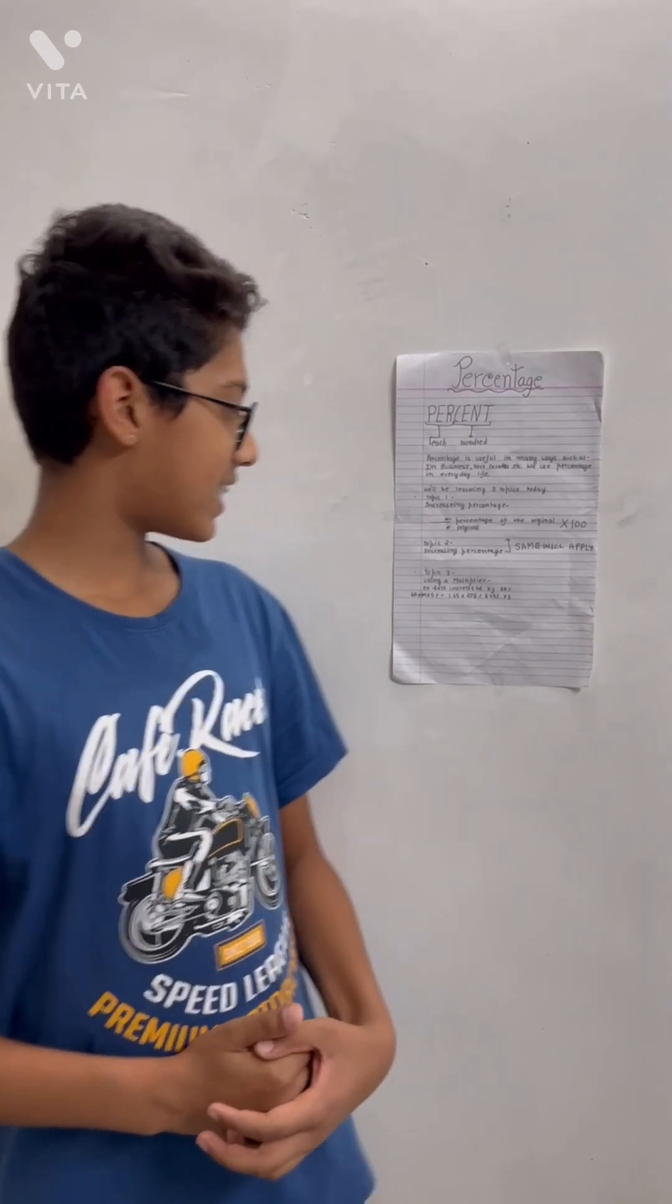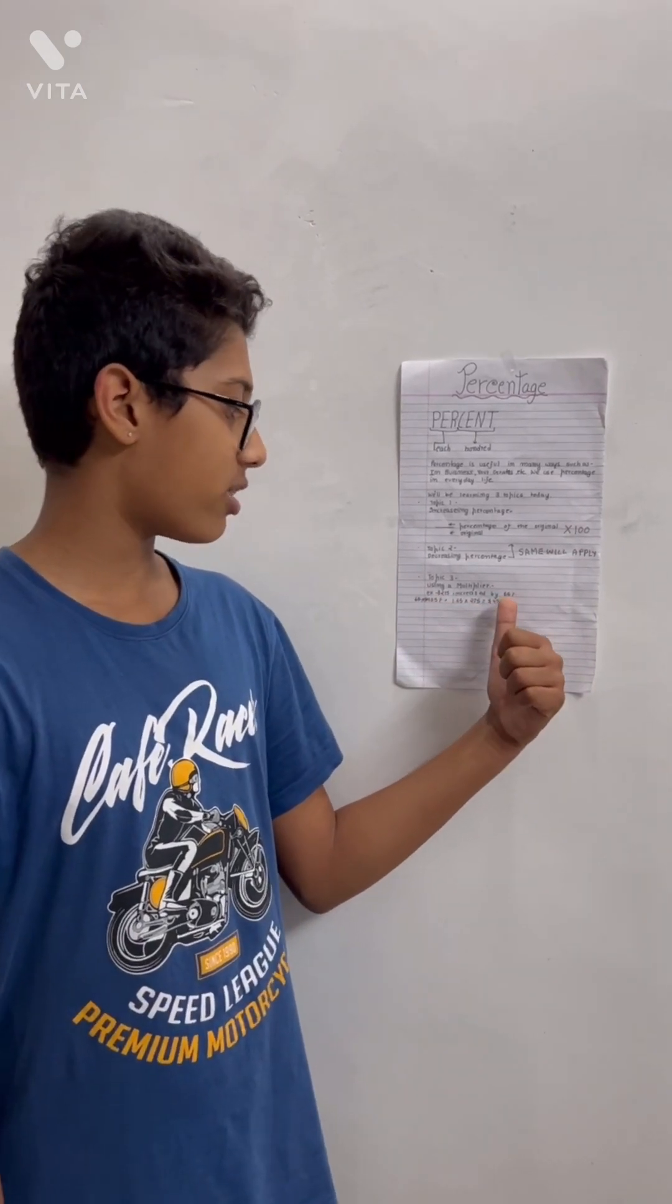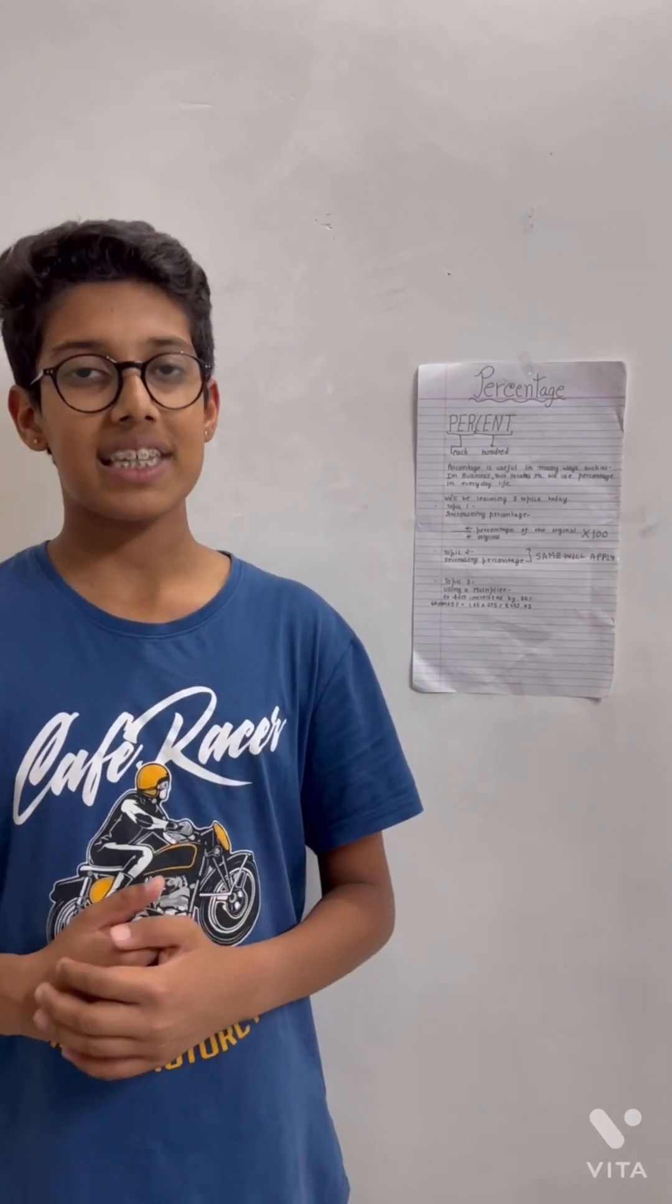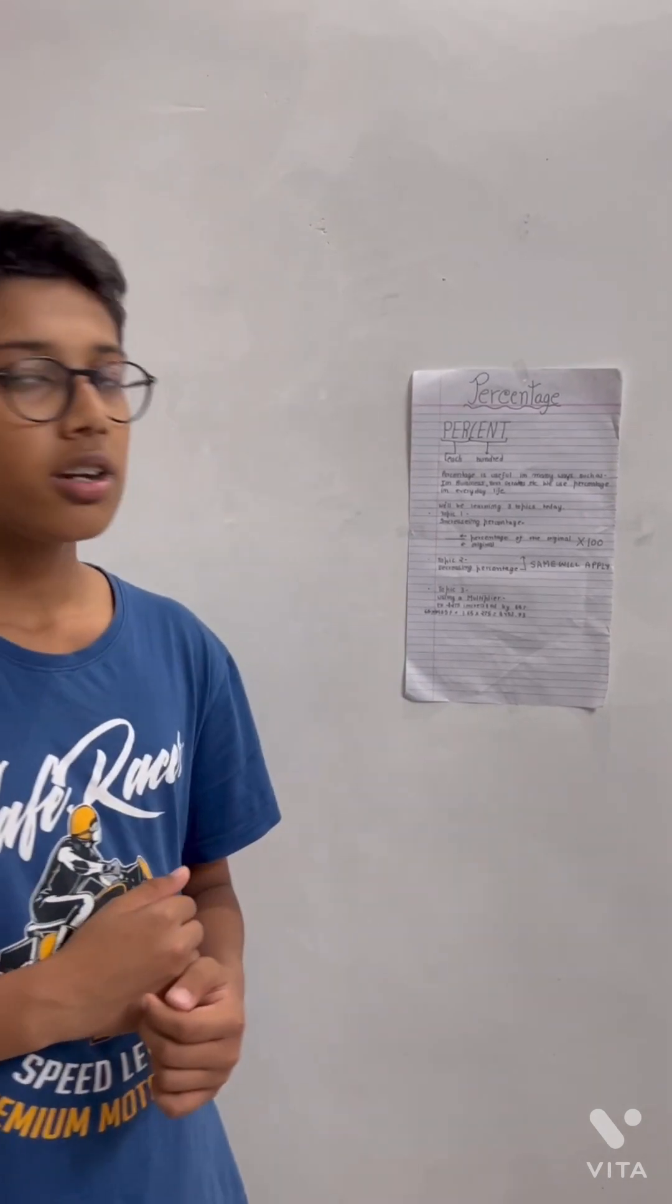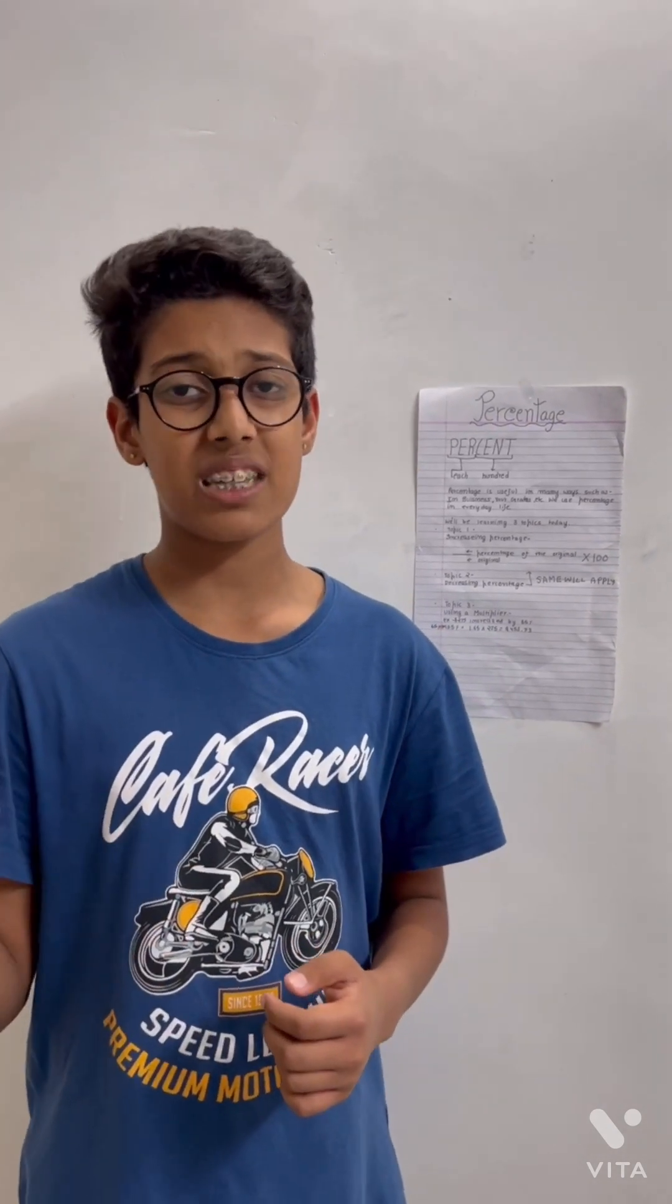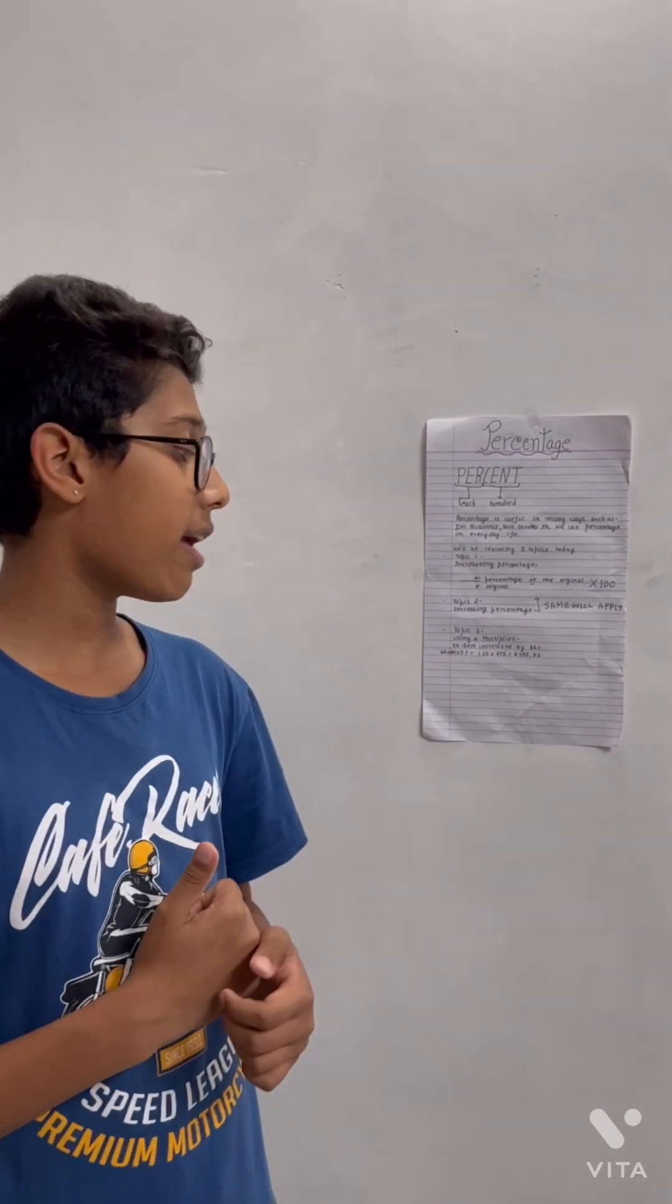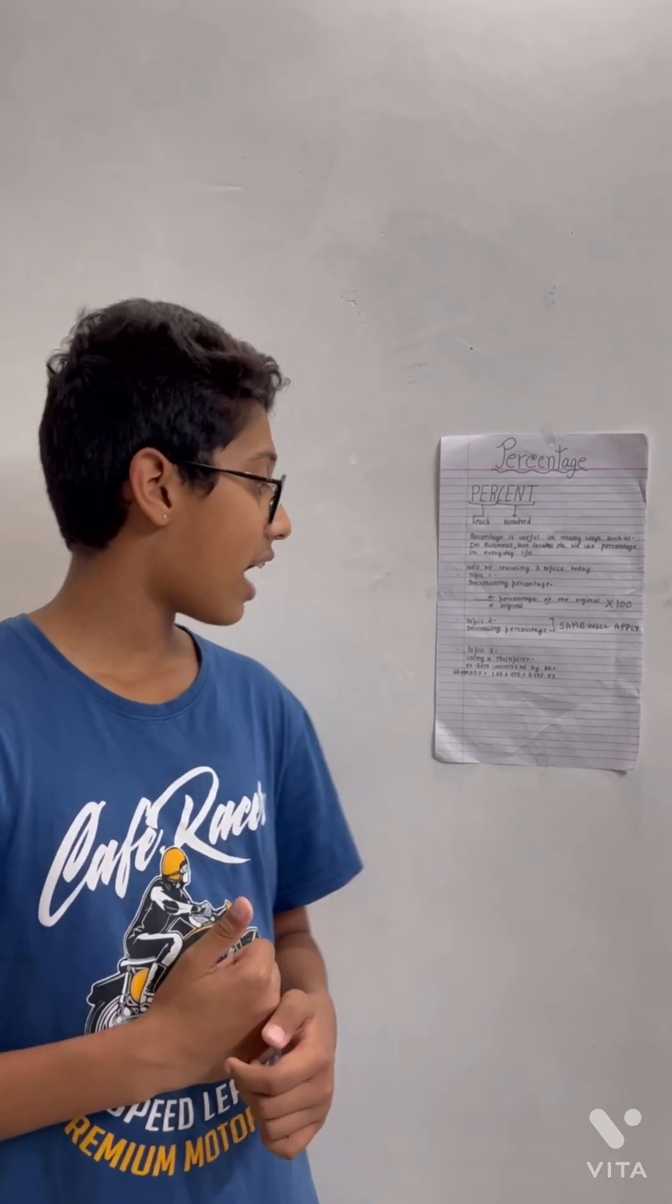For example, 275 dollars is increased by 65 percent. So 100 plus 65, that comes to a total of 165. Then we'll divide that, we'll come up to 1.65. Then we'll multiply 1.65 by 275, that adds up to 453.75 dollars.